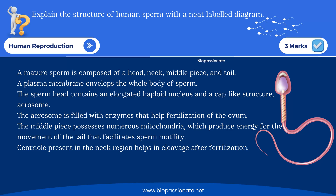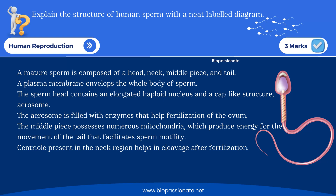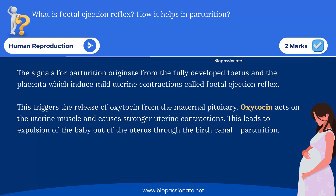Another diagram-based question for three marks: explain the structure of human sperm with a neat labelled diagram. It's a simple diagram where you draw the head, neck, body (middle piece), and tail. Label the different parts including the acrosome, nucleus, centriole, middle piece with mitochondria, and tail.